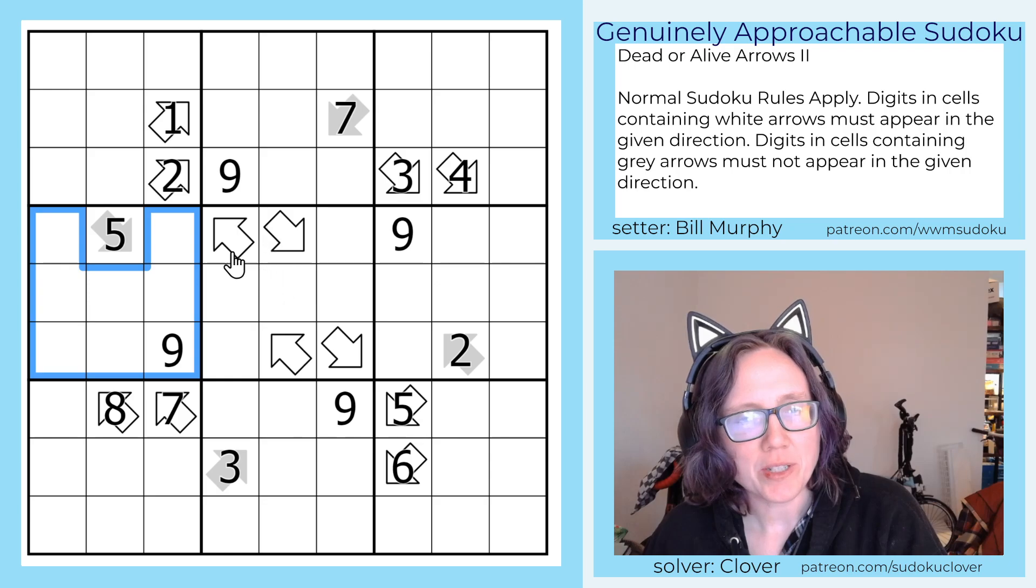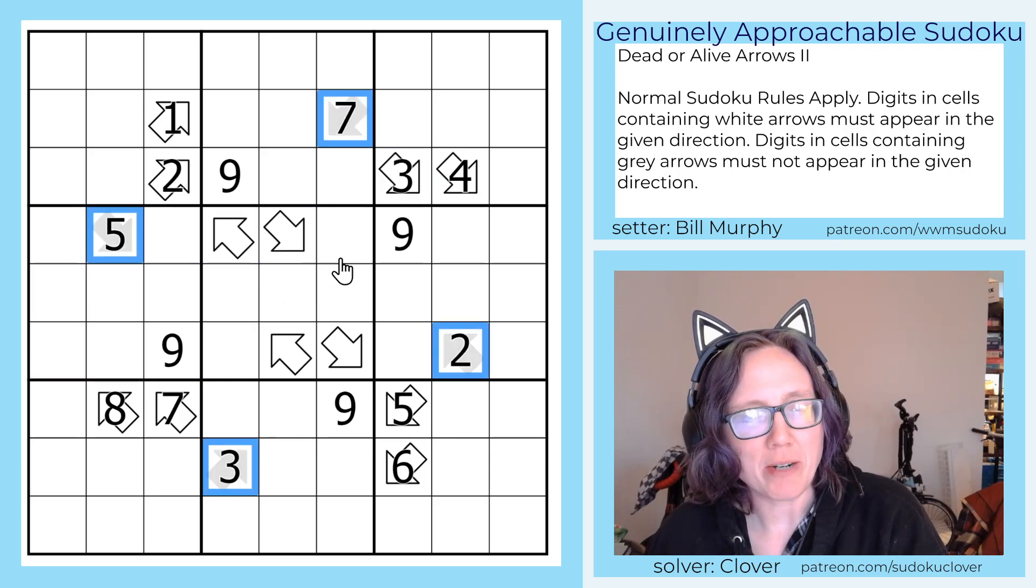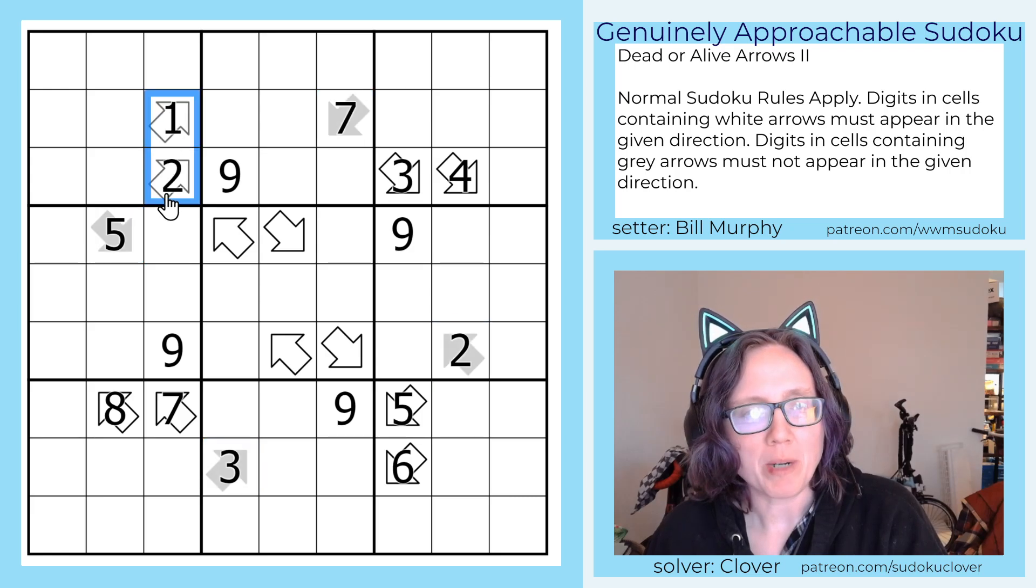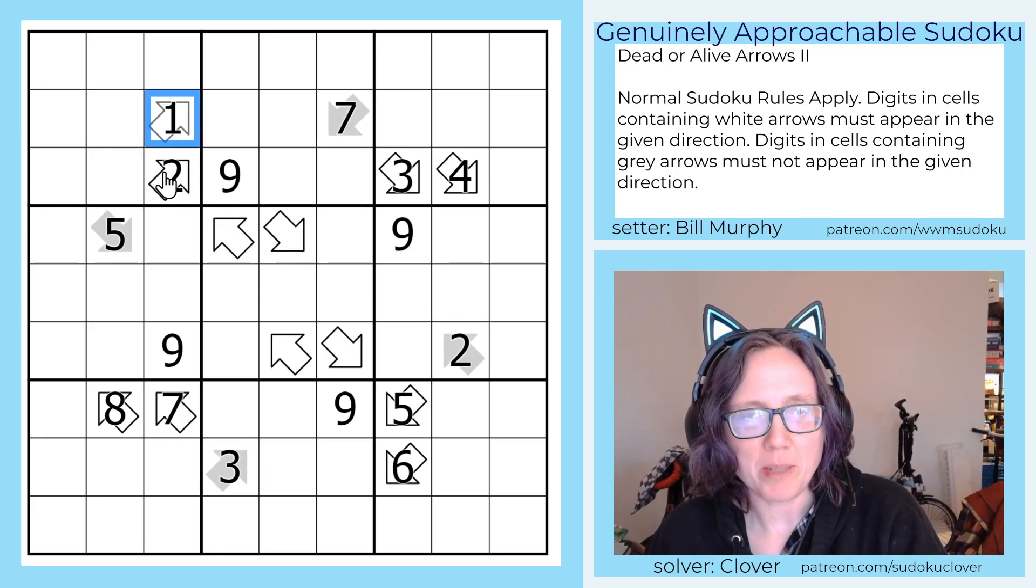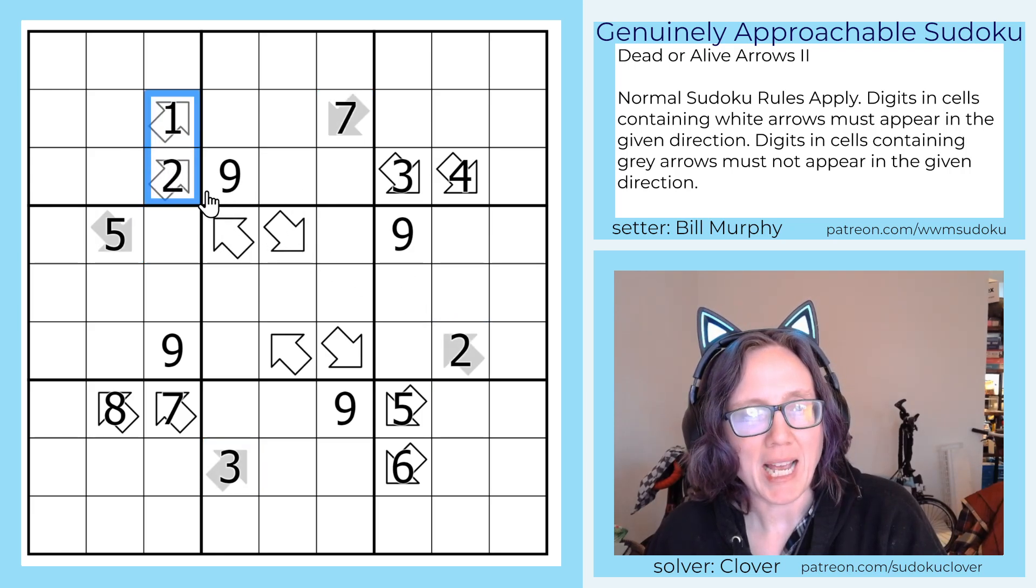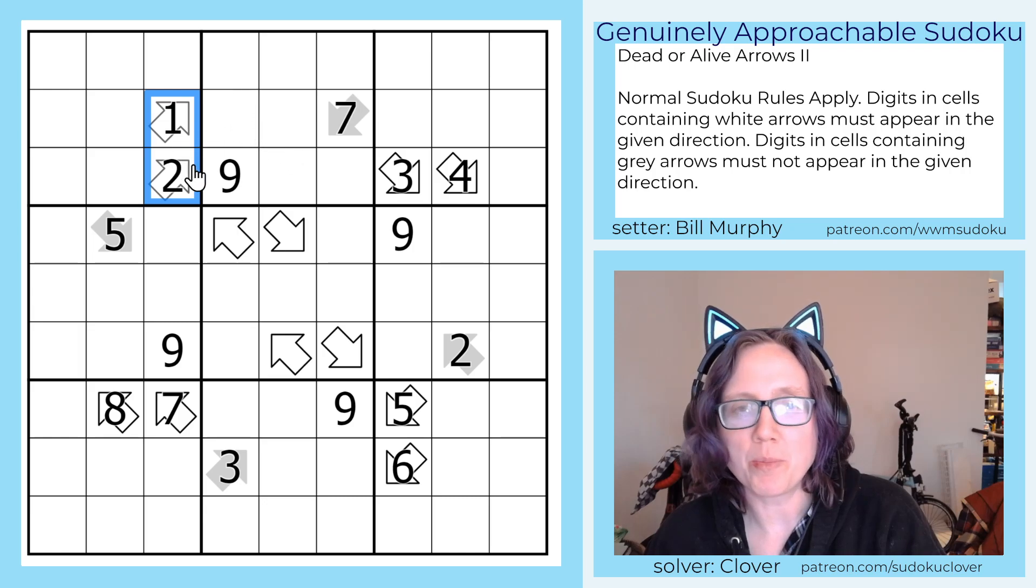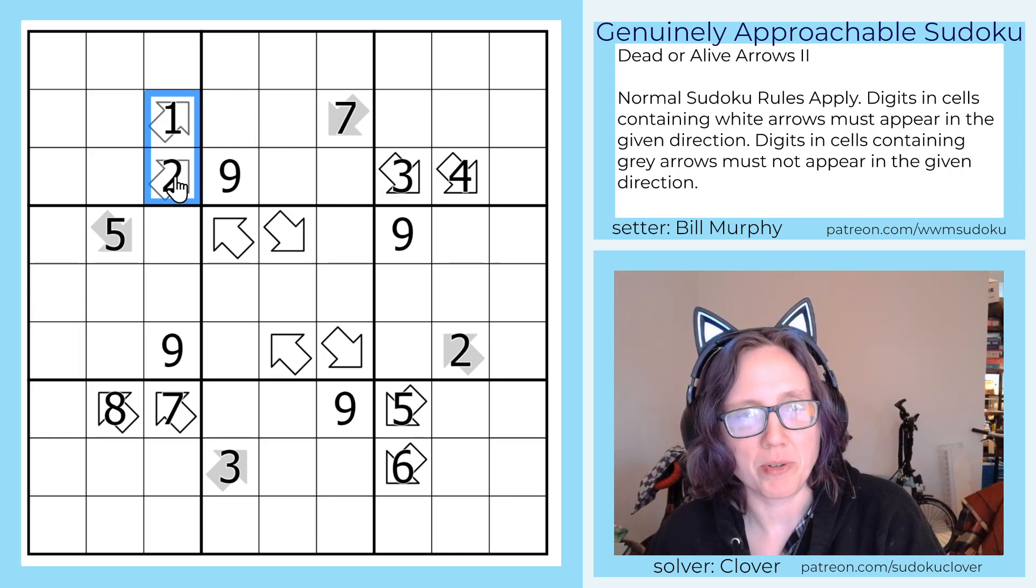In addition, there are some outlined white arrows in the grid, and then there are some non-outlined gray arrows. Wherever there's a white arrow, whatever digit appears in that white arrow has to appear at least one more time in the direction the arrow is pointing.